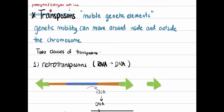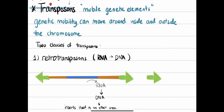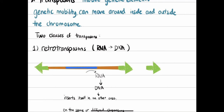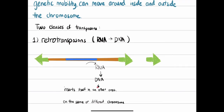The first class is the retrotransposon. The transposon gene is transcribed and translated to DNA, and then this DNA can go and insert itself in different areas or on the same chromosome. The original transposon remains sitting on the same spot. Remember that 'retro' just refers to RNA going to DNA — just like retroviruses and retrotranscription: retro always refers to RNA to DNA.